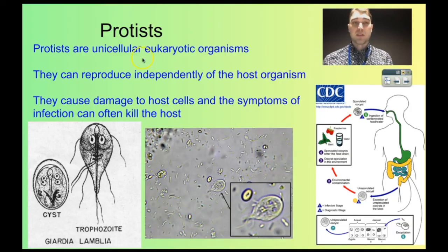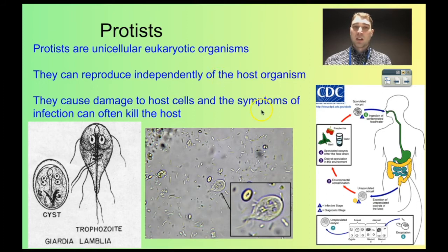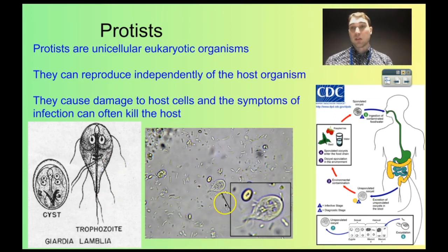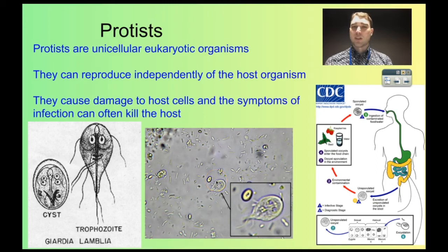Now we're going to look at protist pathogens. Protists are unicellular eukaryotic organisms — a large group — and they reproduce independently of the host organism; they don't need to go inside cells. The way they cause damage is they can damage host cells, and the body's overreaction of the immune system can kill the host too. Here we have Giardia, which infects water — when you drink it, it causes mainly diarrhoea and vomiting. Sydney had problems with Giardia getting into their water supply, so they recommended boiling water.